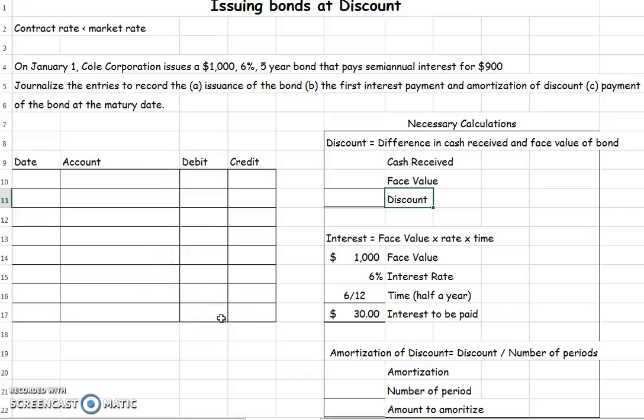Let's talk about issuing bonds at a discount. As a reminder, this would mean that the contract rate is less than the market rate — that is, the interest rate written on the bond is less than what you could get out there in the general market. Therefore, it's going to be issued at a discount.